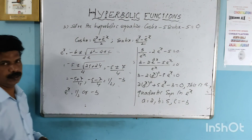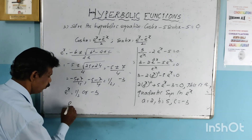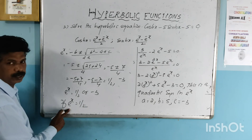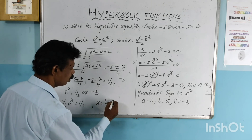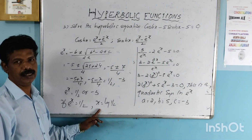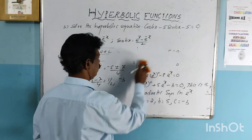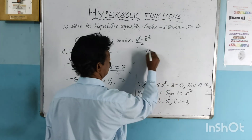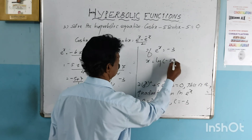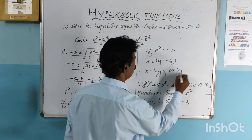Now we solve for x. If e raised to x equals one half, taking log on both sides gives x equals log of one half, which equals minus log 2. If e raised to x equals minus 3, then x equals log of minus 3. Therefore the values of x are log of one half or log of minus 3.